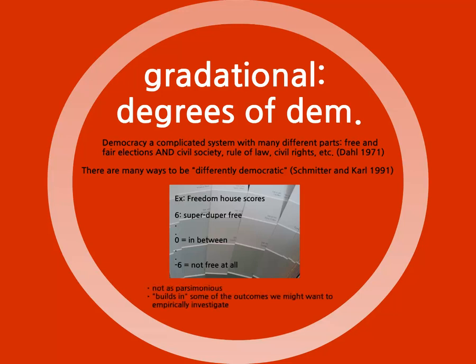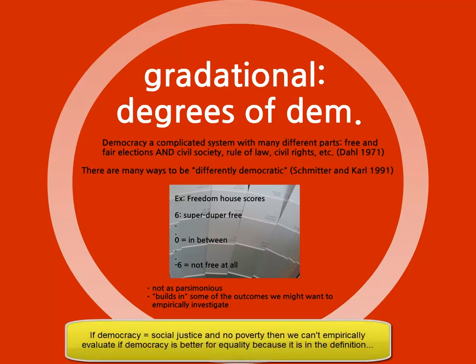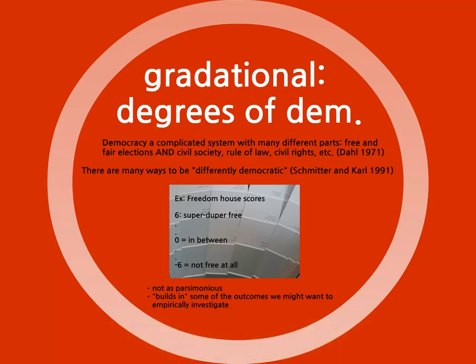Still, the gradational approach has its disadvantages. First, this is not really as parsimonious or simple as the dichotomous measure. Whereas with a dichotomous measure we always know what the two categories mean because there is a simple and clear rule, with gradational measures you can often have states get the same score for very different reasons. If there are 20 criteria that a state is ranked from 0 to 10 on and then the final score is an average, a 7 can mean very different things. This muddies the water when we try to answer questions about the causes and consequences of regime type. A related criticism is that these measures often build some of the things we want to study about democracy into the definition of democracy itself. For instance, if social justice and freedom from poverty are included in our definition of democracy, then we can't really answer questions about which regime type is best at combating inequality, because we've a priori included it in our very definition of democracy.